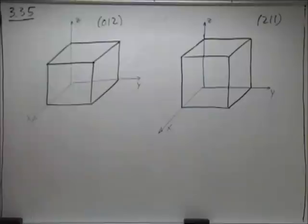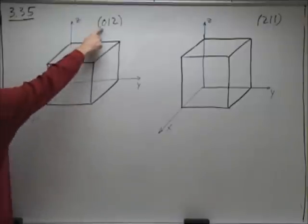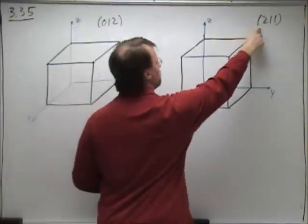This problem simply asks us to sketch on a cube the particular plane that is indicated by the Miller indices. Let's get 0, 1, 2 and 2, 1, 1.